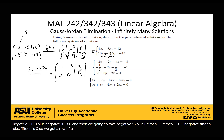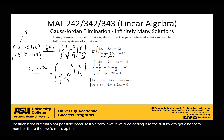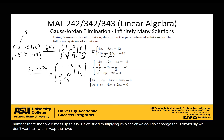So we get a row of all zeros. Typically the next step would be to get a 1 in the next pivot position, but that's not possible because it's a 0. If we tried adding it to the first row we'd mess up that 0; if we tried multiplying by a scalar, we couldn't change the 0; and we don't want to swap rows because we want our row of zeros at the bottom. So we're at the end — this matrix is now in reduced row echelon form.